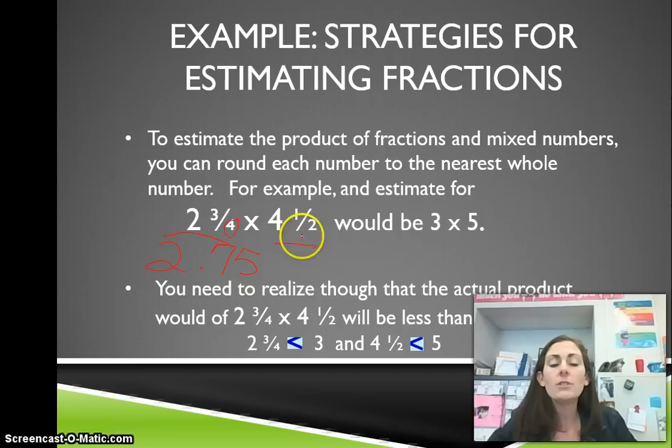Times 4 and 1 half. When you have a half, always, the half is going to be rounded to the next highest whole number. So for a half, then we're going to round 4 and 1 half to 5. So we have 3 times 5.